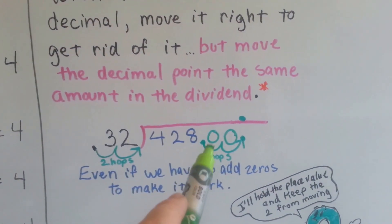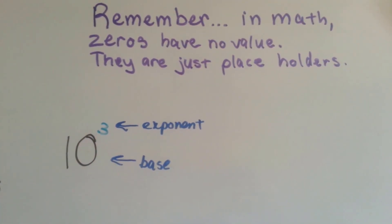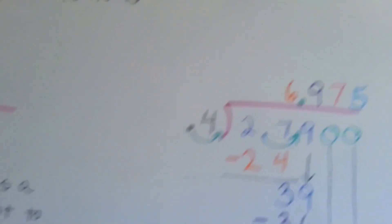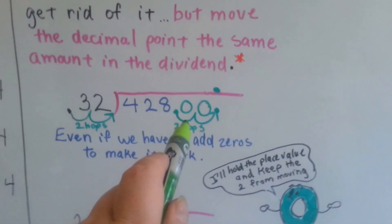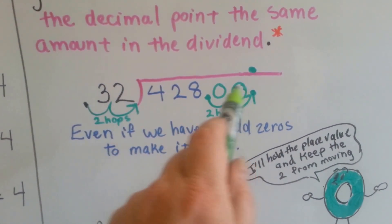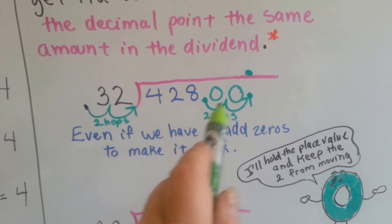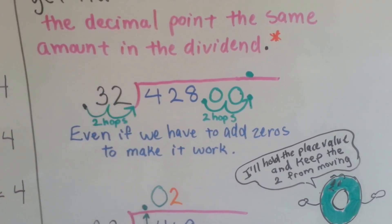So we can put zeros there because of my favorite rule that in math, zeros have no value, they're just placeholders, right? So we can put zeros down here to hold those two empty spaces that the hops created because we have to move the dividend the same amount of hops as the divisor, okay?